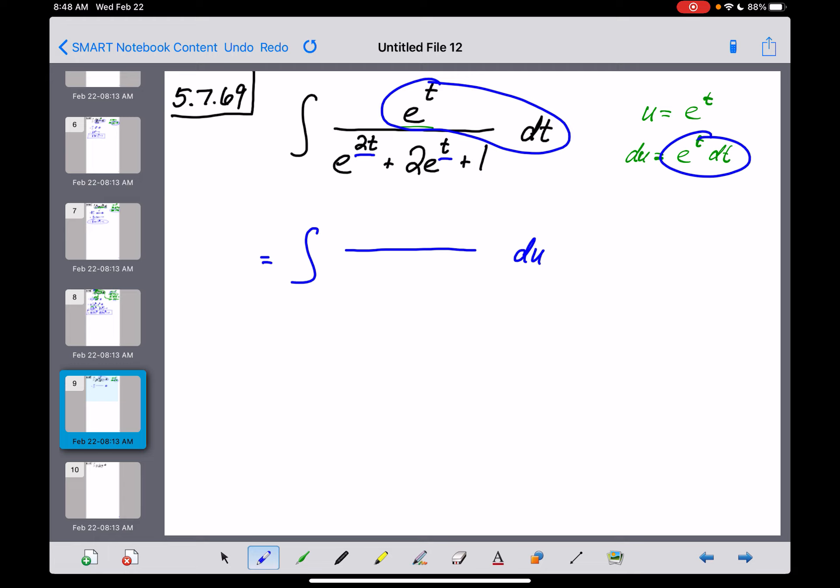Okay? Now, what have I accomplished, though? Down in the bottom, we've got e to the 2t power, which, if you'll notice, is this thing right here squared. If I were to square both sides of this, that would be e to the t squared, and that's an e to the 2t power right there. So that first term right there, e to the 2t, is going to become a u squared.